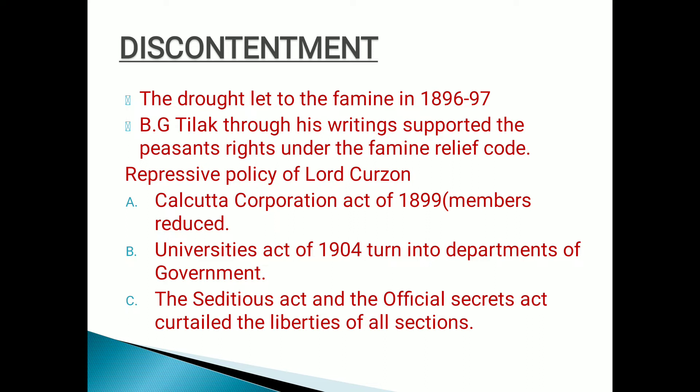During that period, Bal Gangadhar Tilak emerged as a powerful leader of Indian National Congress. He was also a member of the INC, but he was an assertive — totally against the methods and plans of early nationalists. He simply criticized openly and openly supported the peasants and the farmers.